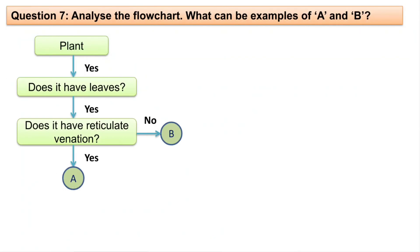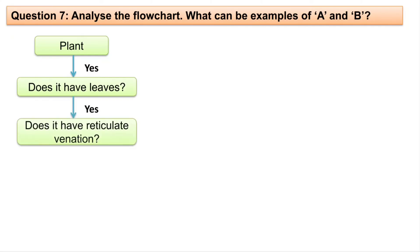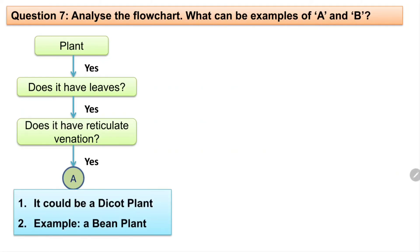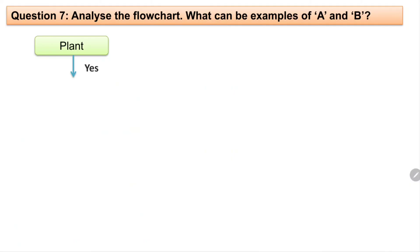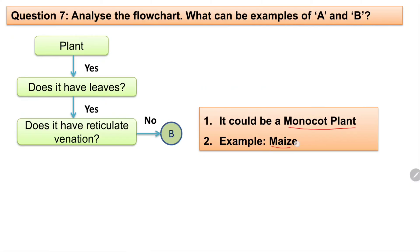Next question: analyze the flow chart. What can be example A and example B? In the flow chart — plant, yes it has leaves, does it have reticulate venation? For A (yes): this would be a dicot plant; an example is bean. For B (no reticulate venation): it could be a monocot plant; an example is maize.